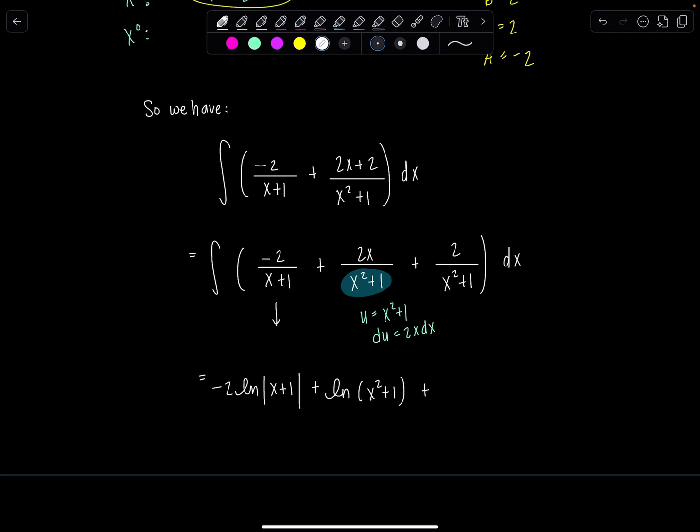And then 2 over x squared plus 1. The 2 is just a constant. It's going to come along for the ride. And we know anti-derivative of 1 over x squared plus 1 is tan inverse of x plus c.